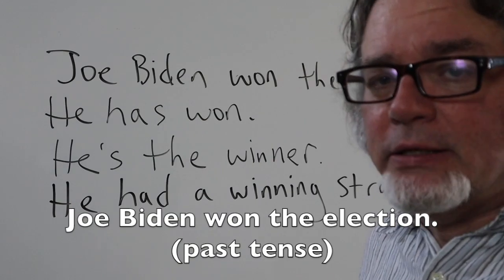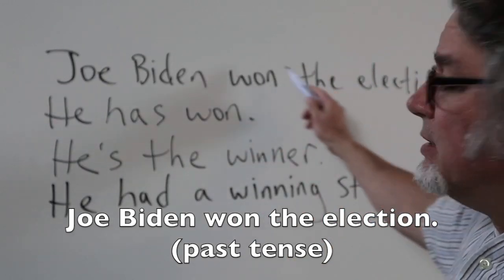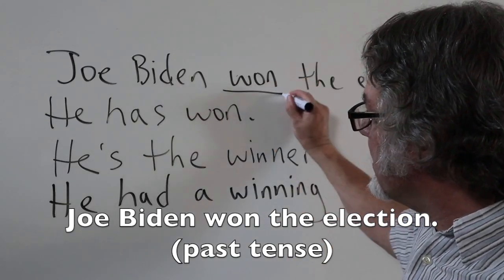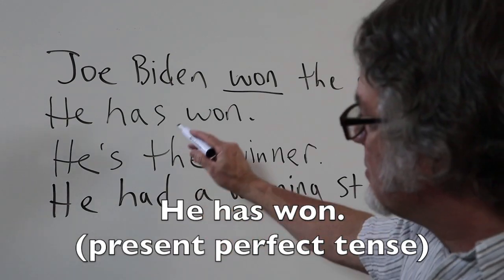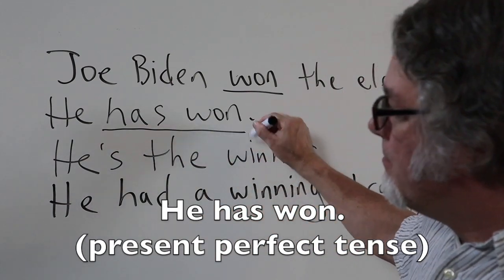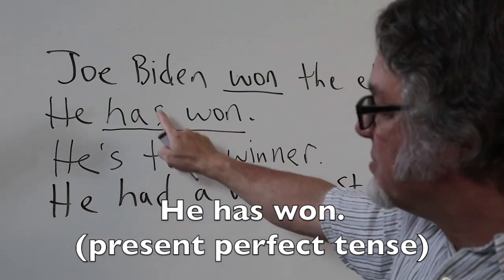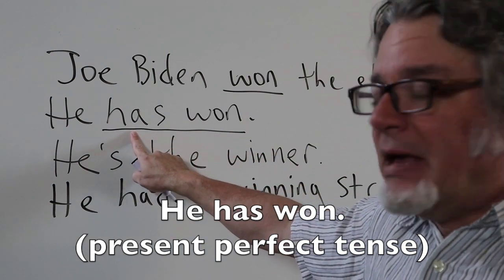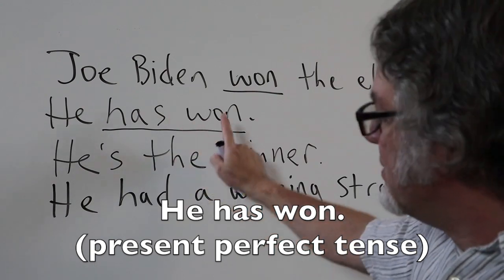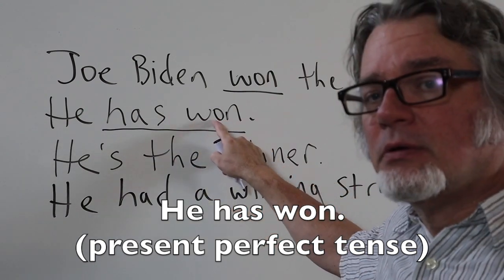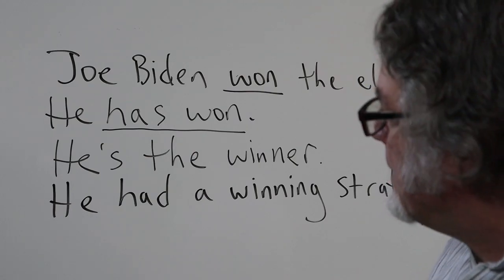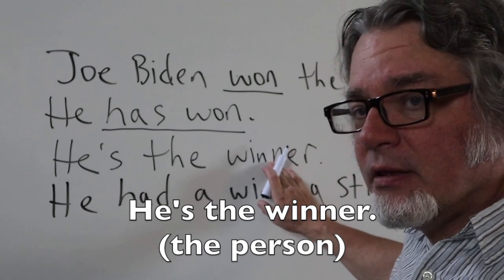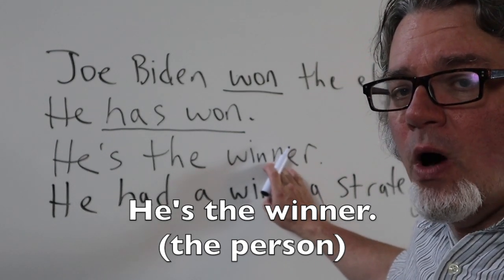Joe Biden won the election — this is in the past tense. He has won — this is the present perfect tense. Here's the helping verb matching the subject, and this is the past participle. He's the winner; this is the person who won.